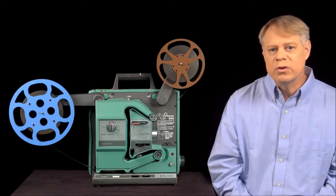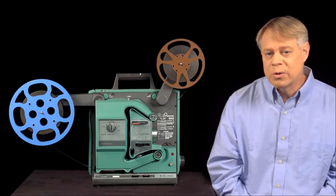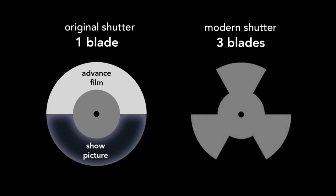This flicker is the origin of the term flick as slang for movies. But modern film projectors don't have this problem. How did they fix it? Originally, shutters had a single blade that covered the advancement of the film with an open section that showed the picture. Modern shutters have three blades.